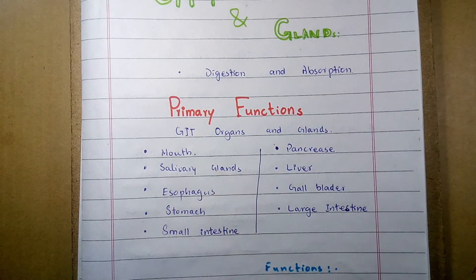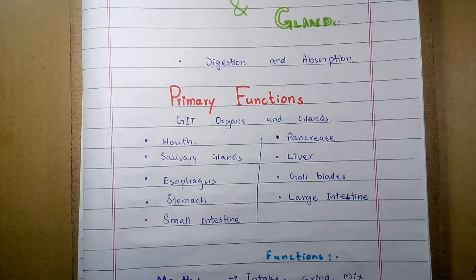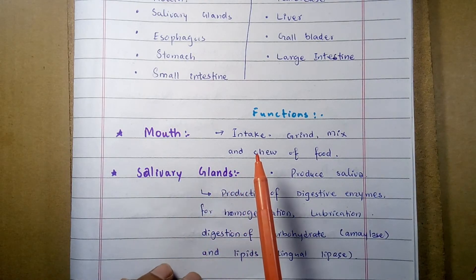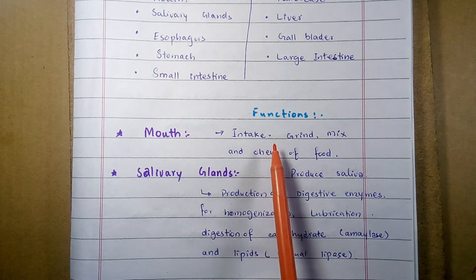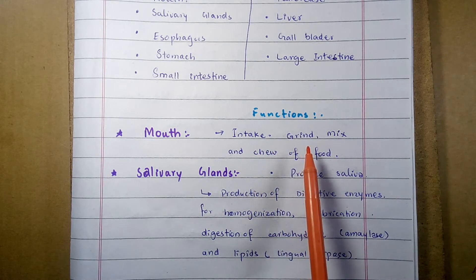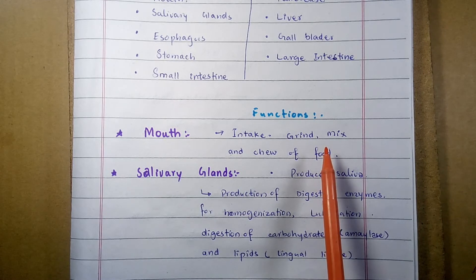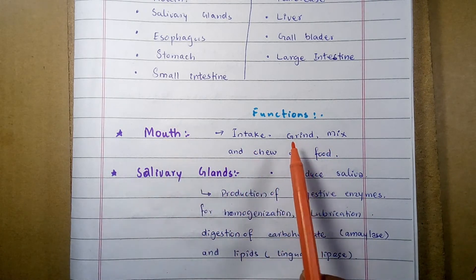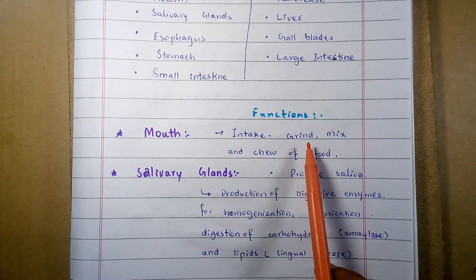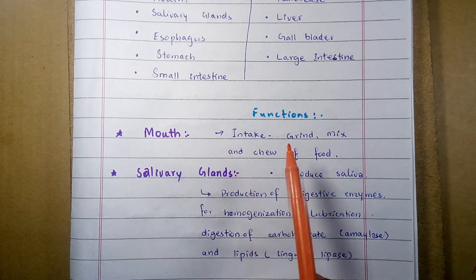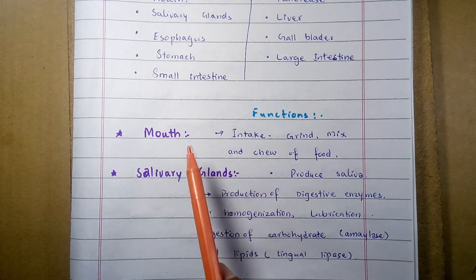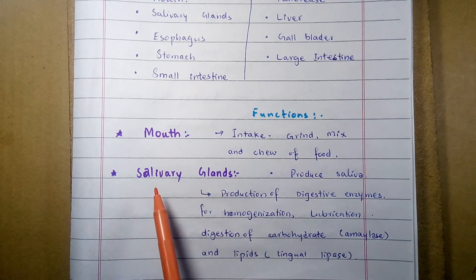Number one is the mouth. The mouth is the beginning of the digestive system. After ingestion, the food is chewed into pieces that are easily digested. The mouth is responsible for the intake of food material, grinding of the taken-up food material, and mixing and chewing of the food.